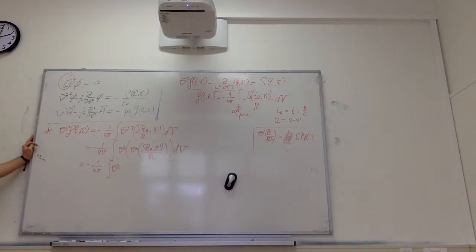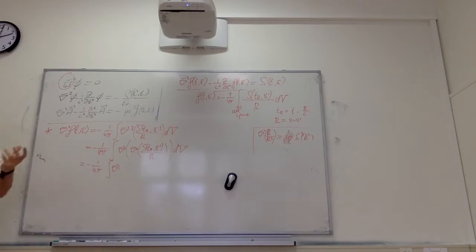You have to take a partial derivative with respect to r, and also with respect to the retarded time — so we apply the extended chain rule, which comes with two terms now.